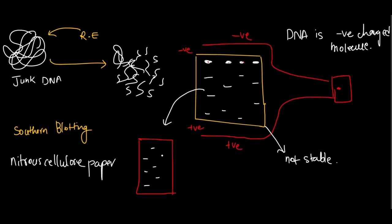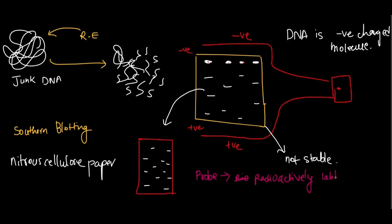After Southern blotting, we perform hybridization with a probe. Probes are oligonucleotides prepared in the lab that are sequence-specific — in our case, against VNTRs — and they are radioactively labeled. The VNTR probe is allowed to hybridize with the sample. After hybridization, we perform autoradiography to detect the VNTR fragments, which emit light to reveal the pattern.